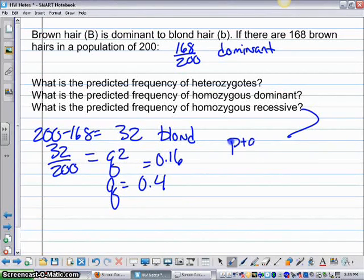And then remember, P plus Q equals 1. So if Q equals 0.4, then what is P? It has to be 0.6.